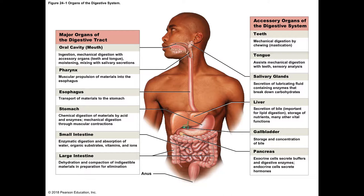We also have proteins, another name for which is polypeptides. Polypeptides have to be broken down into their smallest unit — amino acids. Our body can absorb amino acids because they're small enough to go through the wall of the digestive tract and through the wall of the blood vessels to get into the blood. So we can absorb monosaccharides and amino acids.